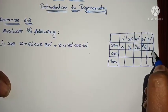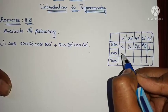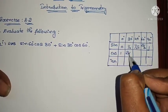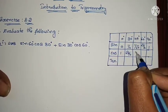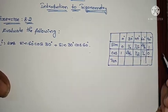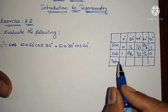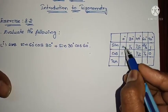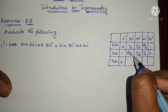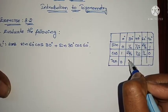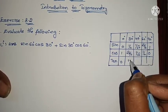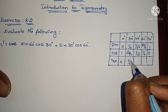For cos, read right to left: 1, √3/2, 1/√2, 1/2, 0. For tan, it's sine divided by cos. 0 divided by anything is 0. Then 1/2 divided by √3/2 — the 2s cancel — giving 1/√3.